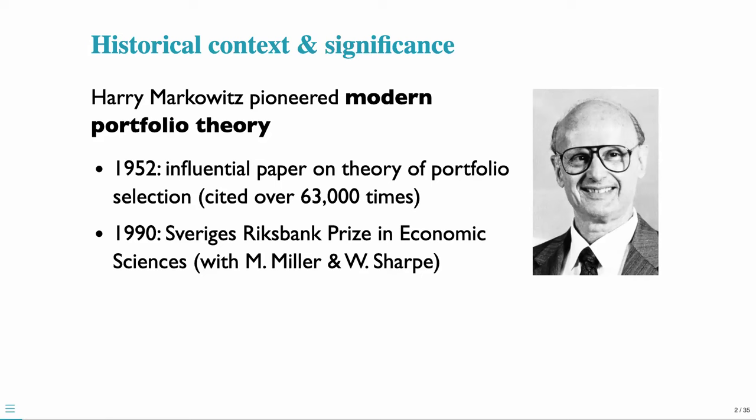Let's start with a bit of historical context and significance of Harry Markowitz. He pioneered modern portfolio theory by writing a very influential paper published in 1952 — a theoretical paper on portfolio selection, cited more than 36,000 times. He also wrote a book on the same topic, and eventually in 1990 he received the Sveriges Riksbank Prize in Economic Sciences, commonly known as the Nobel Prize in Economics, together with Merton Miller and Bill Sharpe.